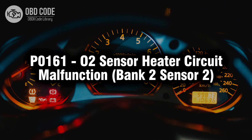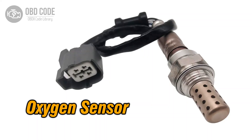Welcome. In this video we will talk about code P0161, its symptoms, causes and possible solutions. The P0161 trouble code indicates a malfunction in the oxygen (O2) sensor heater circuit of bank 2 sensor 2. This code typically points to issues related to the heating element within the oxygen sensor positioned after the catalytic converter, helping the sensor reach operating temperature faster for optimal performance.